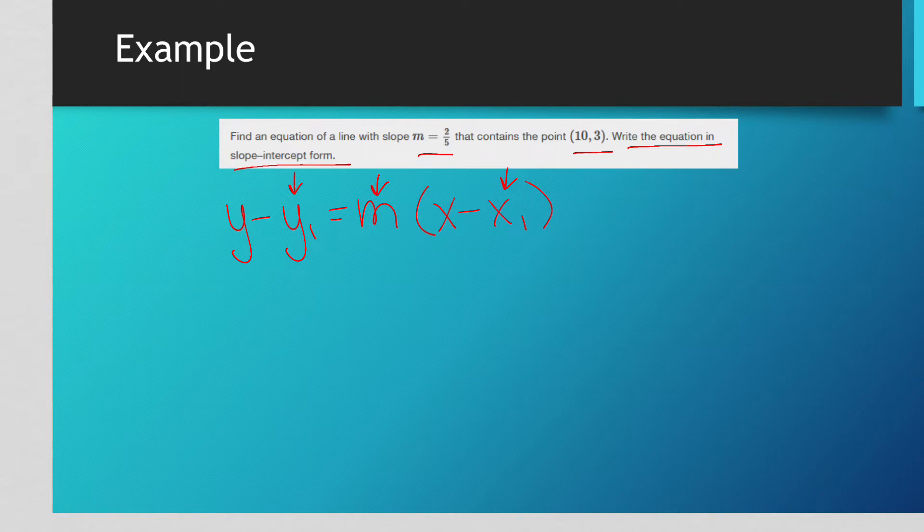Now, write it in slope intercept form is what they're asking us for. But if your problem simply says, leave it in point slope form, then all you have to do is y minus, our y coordinate is 3, equals our m is 2/5, and then x minus our x coordinate, which is 10. This right here is point slope form. If the problem says leave it in point slope form, you're done, that's it, you have an equation.